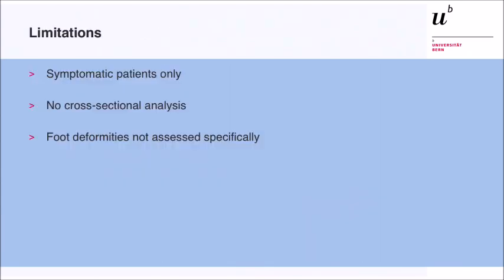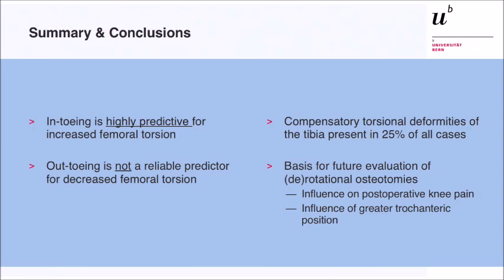We have some limitations: we only included symptomatic patients, it is not a cross-sectional analysis, and we did not specifically assess foot deformities. In summary: in-toeing is highly predictive for increased femoral antitorsion. Out-toeing is not a reliable predictor for decreased femoral torsion. Compensatory torsional deformities of the tibia were observed in 25% of all cases. This provides a good basis for future evaluations of derotational osteotomies of the femur, including understanding the influence on postoperative knee pain and potentially adjusting the greater trochanteric position. Thank you very much.